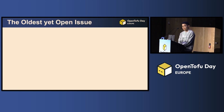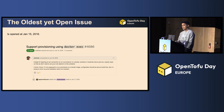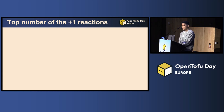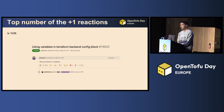Now let's start with some easy ones. What's the oldest open enhancement issue in Terraform? It was opened in 2016, and it's about supporting Docker provisioning. It might not be critical in our workflows, but it indicates that some issues can last for a long period before being resolved. What is the highest number of plus-one reactions among those issues? The number is 1,038 — it's about using variables in the Terraform backend configuration block. In a nutshell, it means users want the configuration language to be more flexible, and we can see this is an important topic in the following statistics.